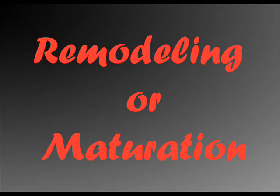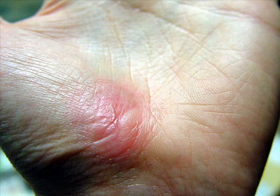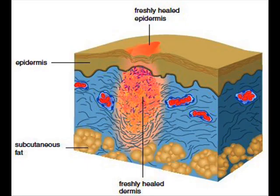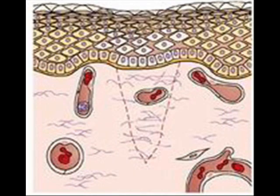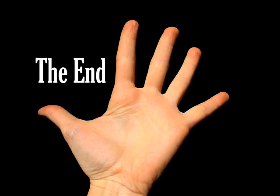The final phase in the wound healing process is called remodeling or maturation. This phase begins several weeks after the wound has occurred and could last for up to two years. During this phase, the epithelial cells are multiplying around the wound and start to enter the wound under the scab. The scab then loosens and eventually falls off. Cellular activity reduces and the number of blood vessels in the wounded area regress and decreases. And that is the end of the wound healing process.